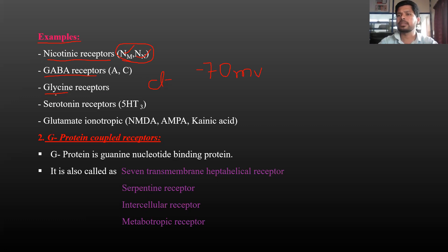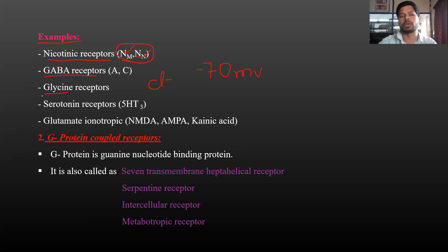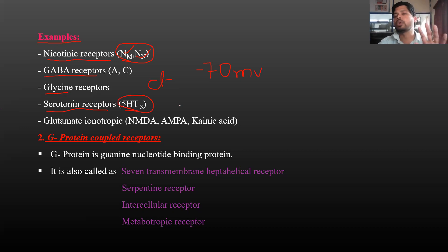Glycine receptors bind glycine as the ligand. Next, serotonin receptors — specifically the 5-HT3 receptor, which is a serotonin type 3 receptor and functions as an ion channel rather than a G-protein coupled receptor.